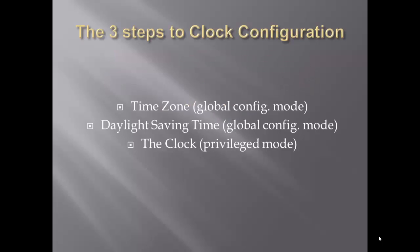The three steps to configuring the clock are: setting the time zone, setting the daylight savings time, and then finally configuring the clock. The time zone and daylight savings time need to be configured while in the global configuration mode, whereas the clock has to be configured in the privileged mode.